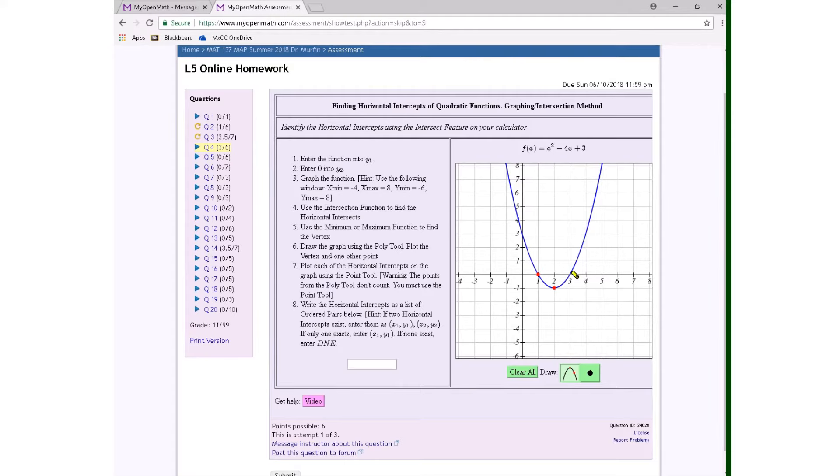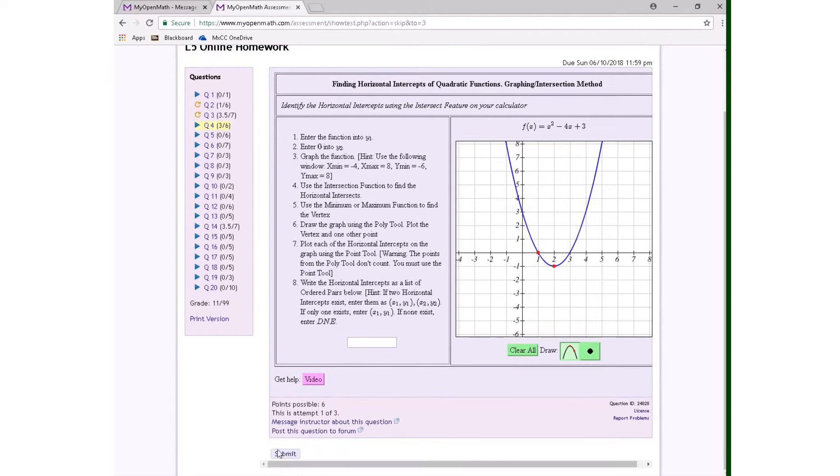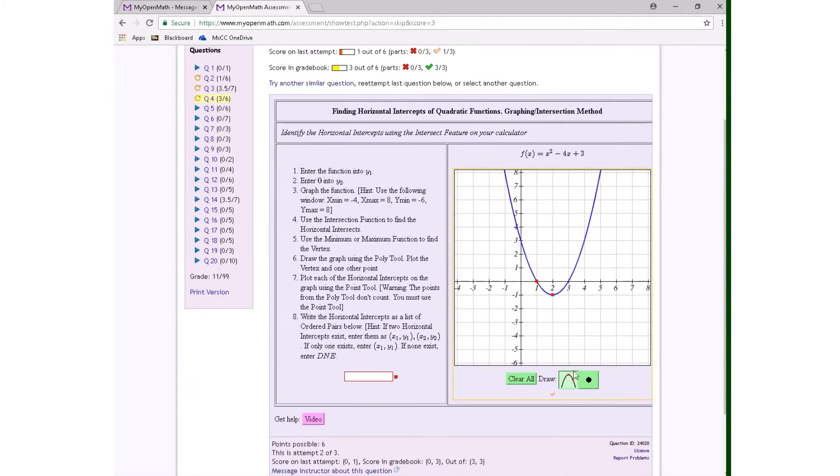But again, this graph is correct, but if I submit it right now, it's going to give me the yellow box. The problem, again, is to plot each of the horizontal intercepts on the graph using the point tool. So I did this part correct, draw the graph using the poly tool, plot the vertex and one other point.